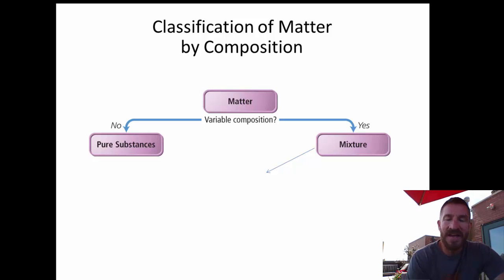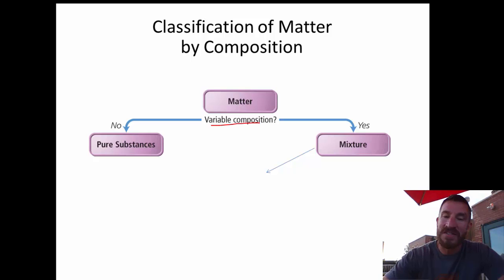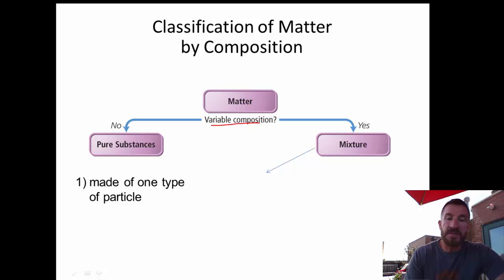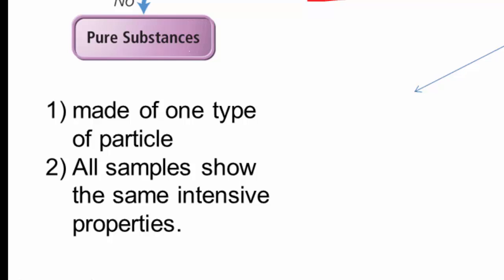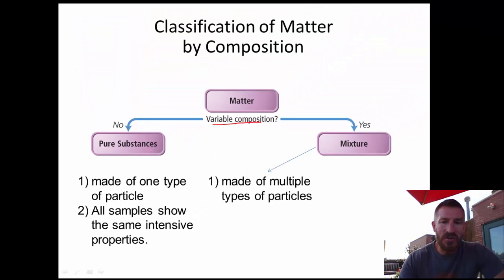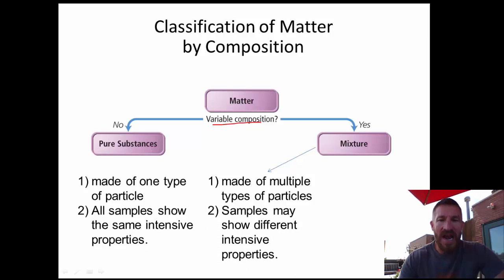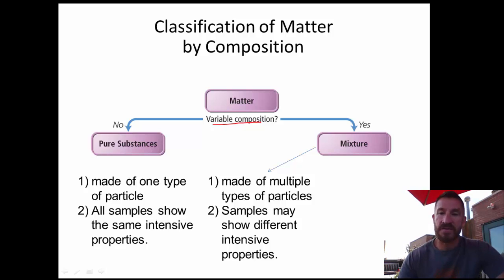Classification of matter by composition: if it has a variable composition, we call it a mixture; if it's not variable, it's a pure substance. Pure substances are made of only one type of particle, and all samples show the same intensive properties. Intensive properties — like boiling point, freezing point, melting point, and color — do not depend on the amount. Mixtures are made of multiple types of particles and can show different intensive properties; for example, the boiling point can vary depending on the combination of substances in the mixture.